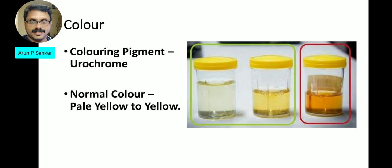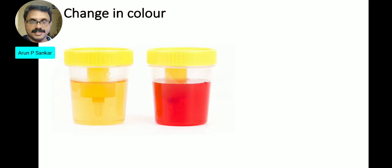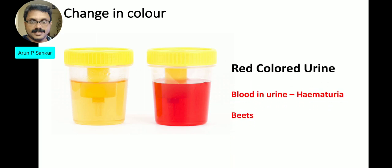Coming to color — normally urine is yellow. Normal urine on the left side appears pale yellow; red-colored urine on the right side indicates hematuria. Red color can also result from certain diet or food items.